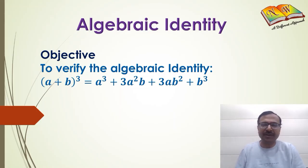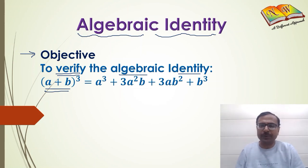This is the activity on yet another algebraic identity. The objective of this activity is to verify the algebraic identity of (a+b)³. The identity is a³ + 3a²b + 3ab² + b³.